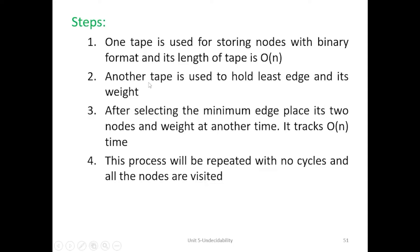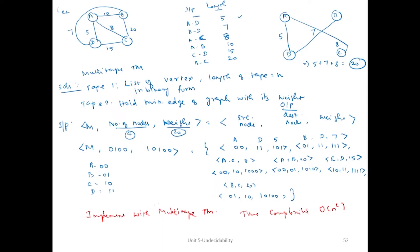The steps for implementing this concept: one tape is used for storing nodes in binary format, and the length of that tape is considered as O(N). Another tape holds the least edge with its weight. After selecting the minimum edge, those two nodes are placed and tracked with O(N) time — this is the time complexity for finding the minimum edge. This process is repeated with no cycles, visiting all nodes.